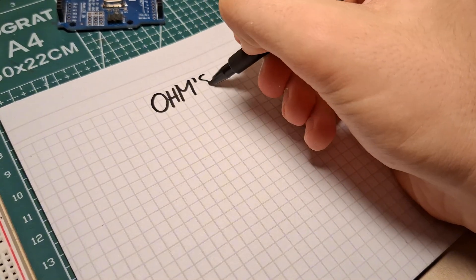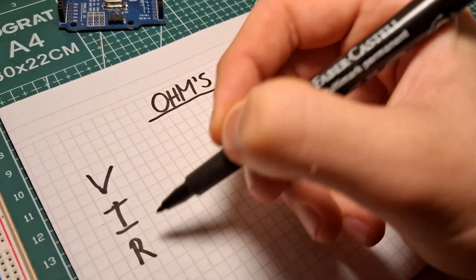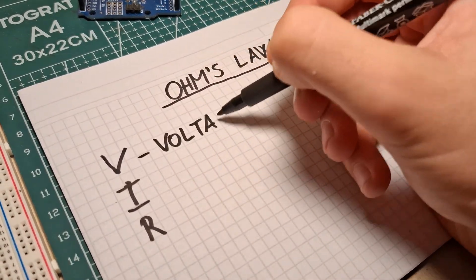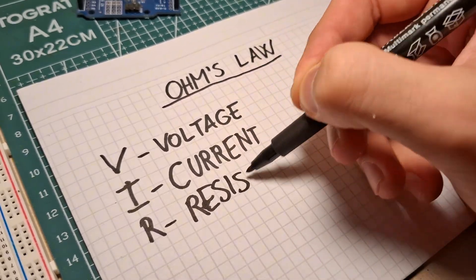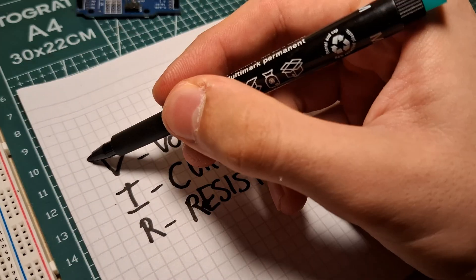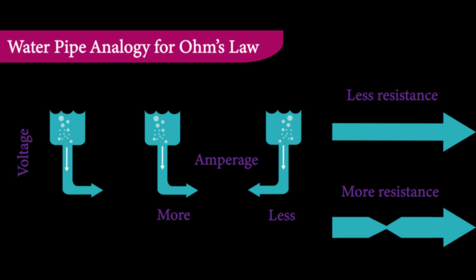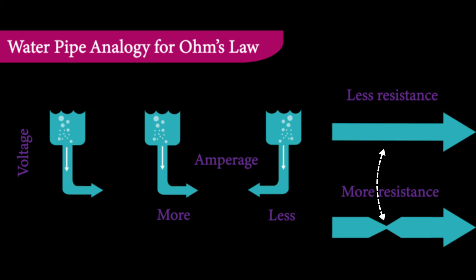What is Ohm's law? Ohm's law describes the relationship between voltage, current, and resistance in any circuit. It's like a roadmap for understanding how electricity behaves. In this example, think of voltage as water pressure, current as the flow rate, and resistance as the size of the pipe controlling the flow.